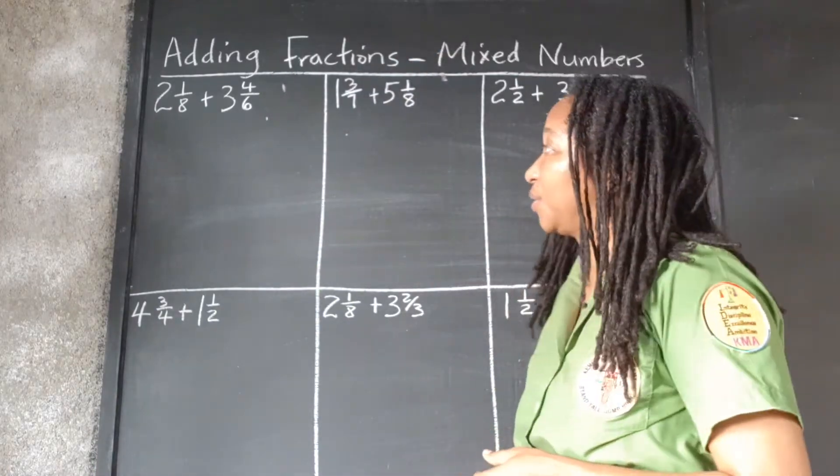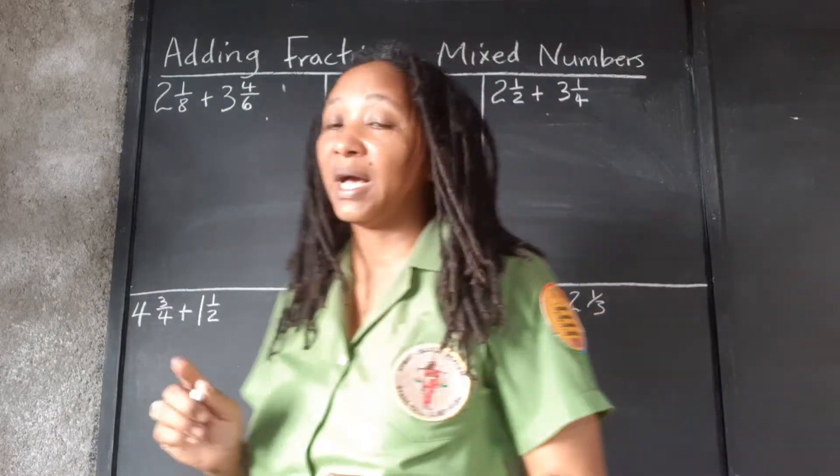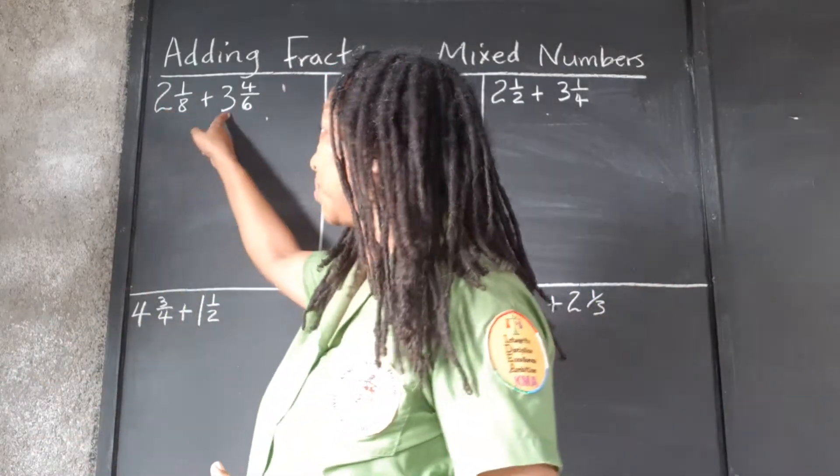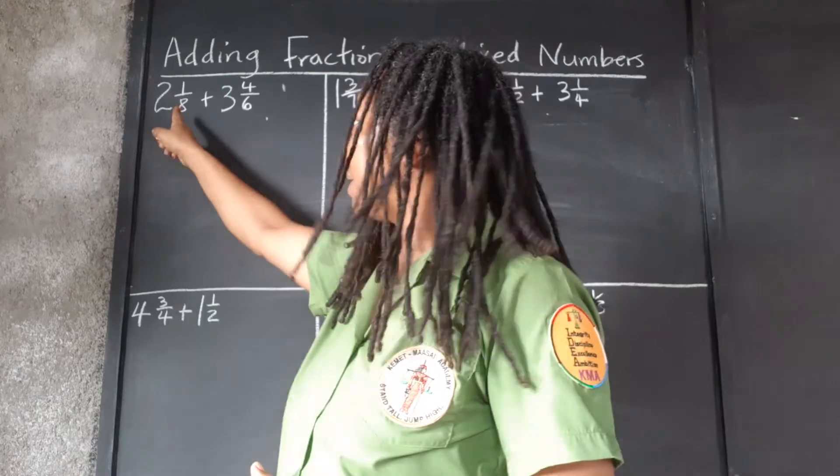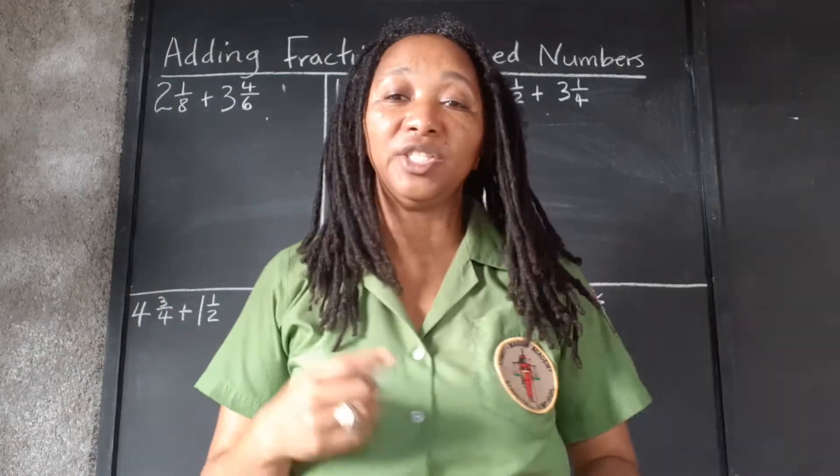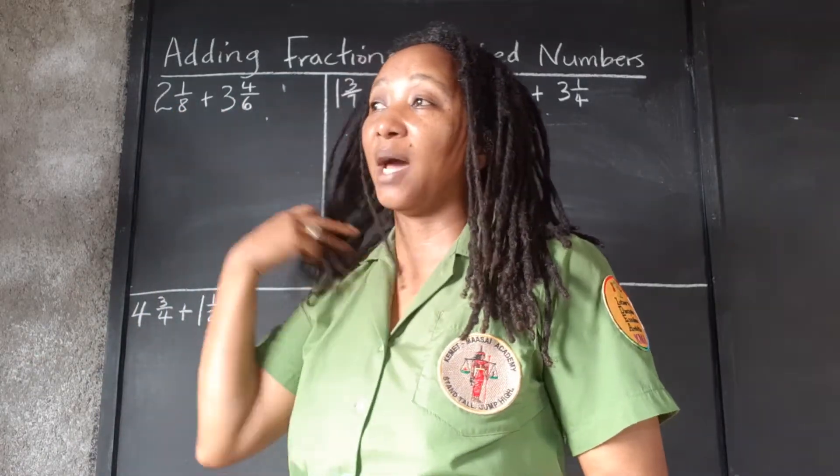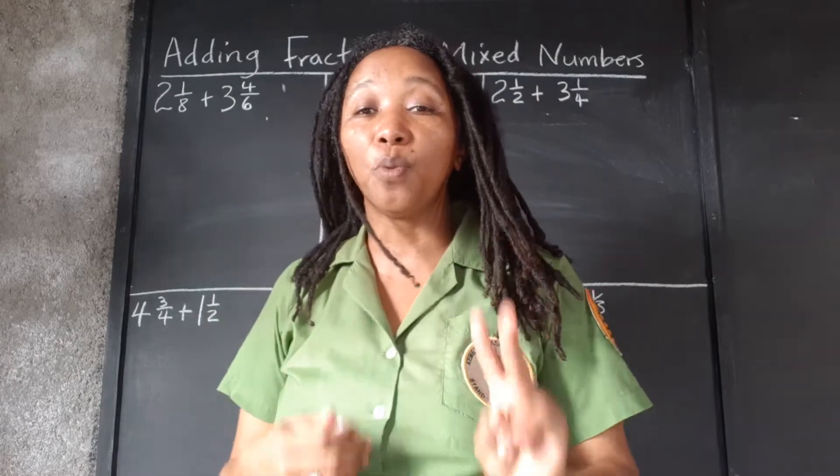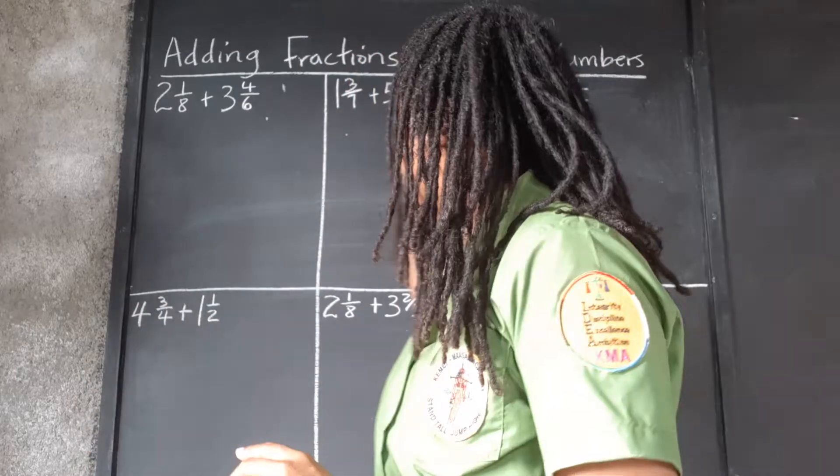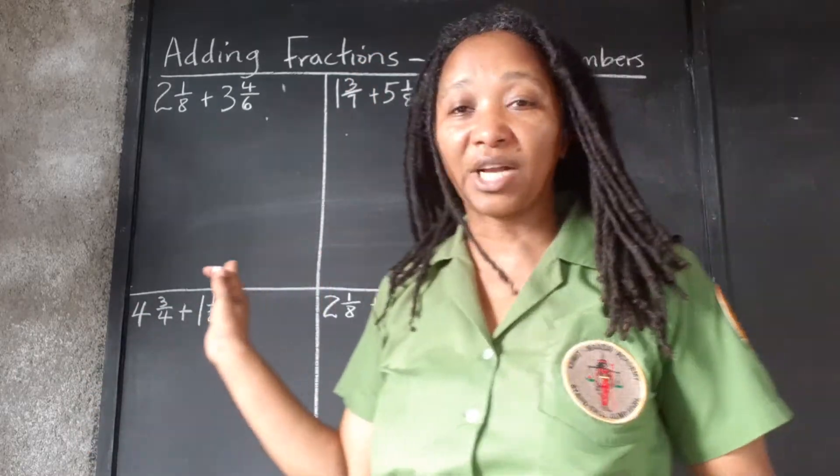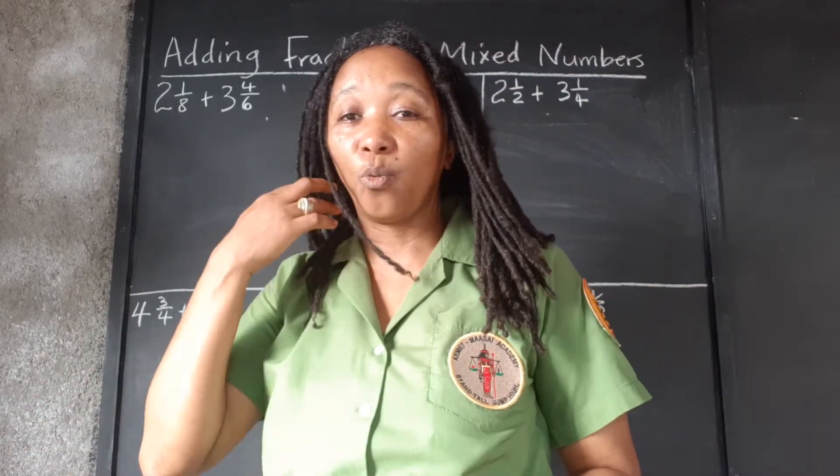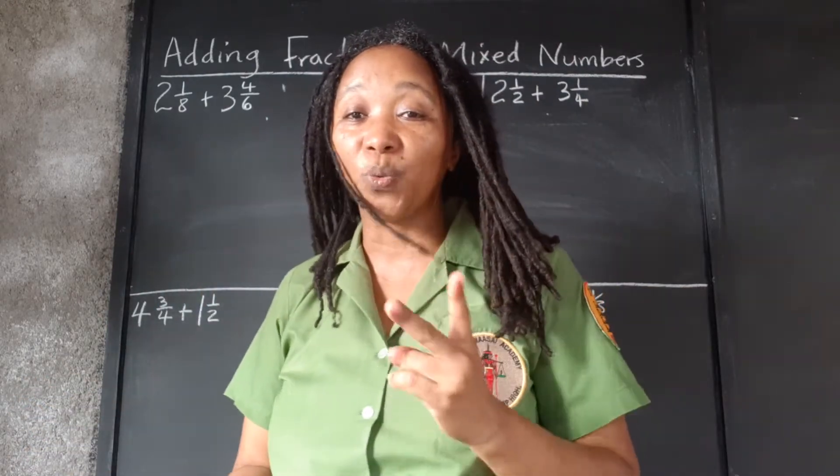Alright, so we're going to add the whole numbers. We're still going to find the LCM of the denominators and I'm actually going to show you two methods. So for each of the fractions that we're adding, I will work them two ways, two methods.